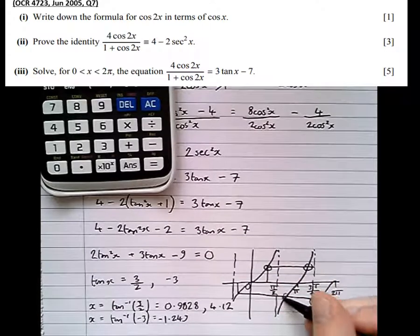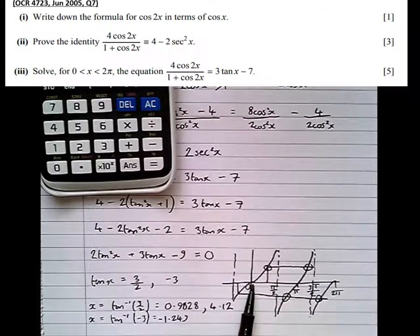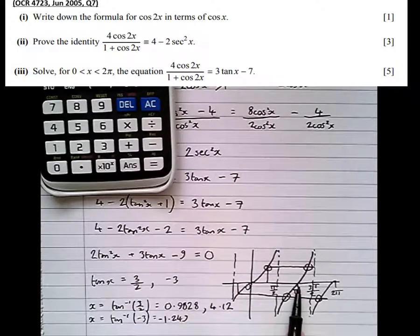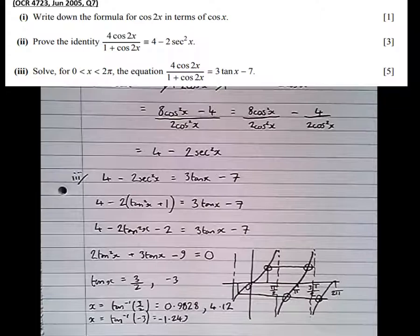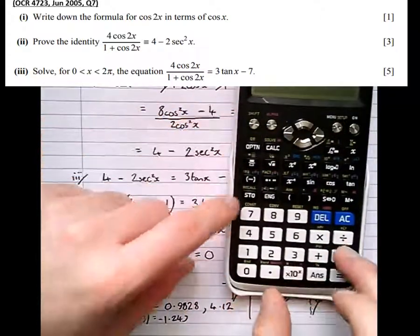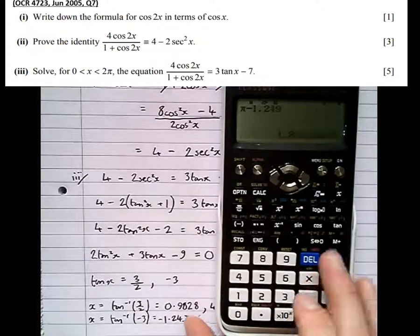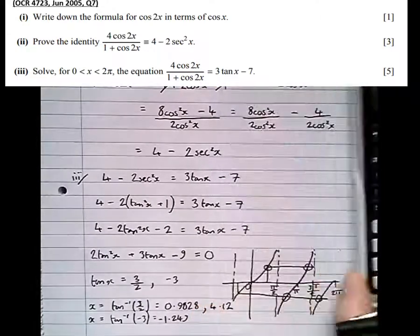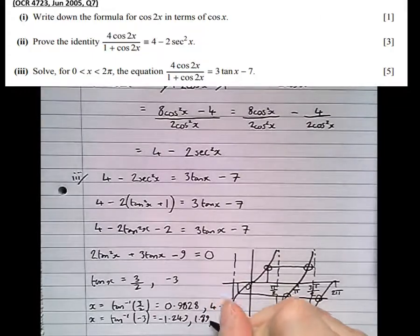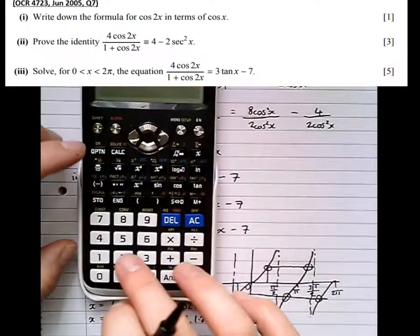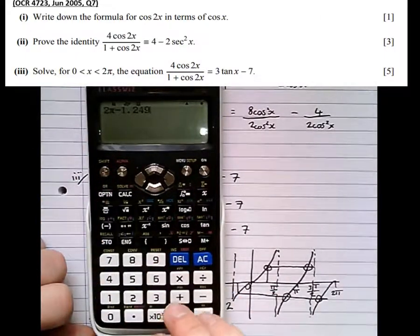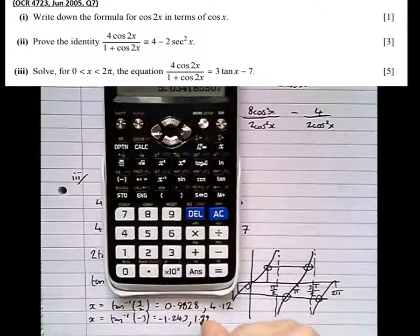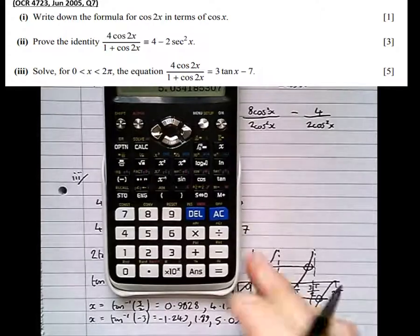So that leads there to two different solutions, which are 1.249 to the left of a zero point. So the next zero point is pi. So pi take 1.249. So pi take 1.249 equals 1.89. Three significant figures. And 2 pi. 2 pi take 1.249 is equal to 5.03. 5.03. Three significant figures.